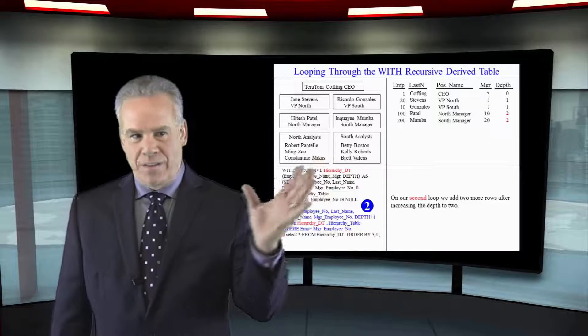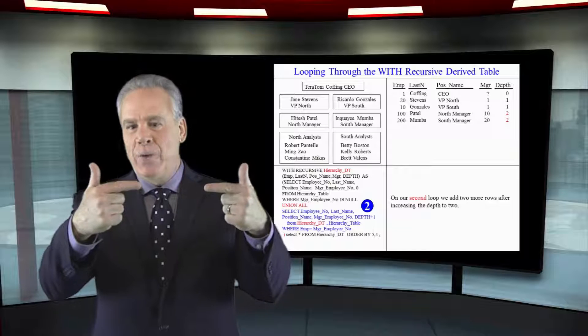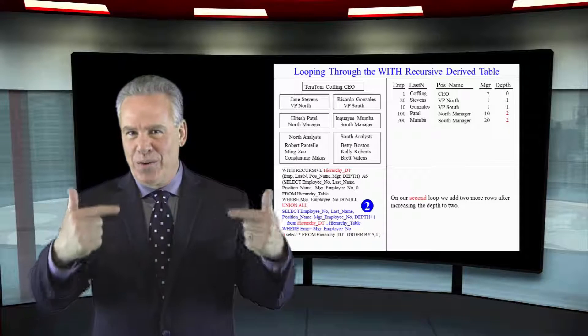So far we have defined the derived table, we seeded it with one row, and we did one loop with the Union All and we added two rows.